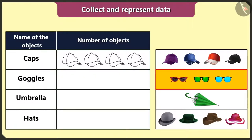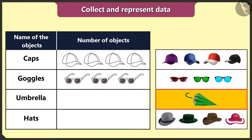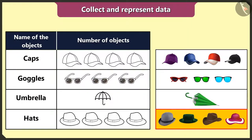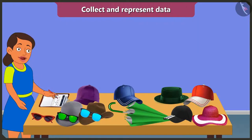There are three goggles, so I will draw three goggles. Then there is one umbrella, so I will draw a picture of an umbrella. And there are four hats, so I will draw four hats. Oh wow, it looks good.